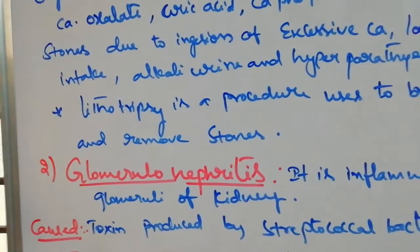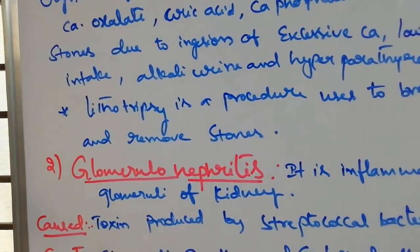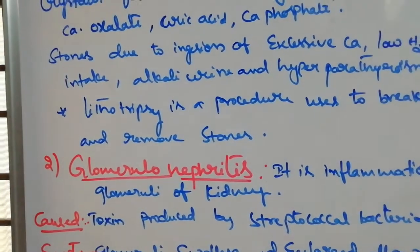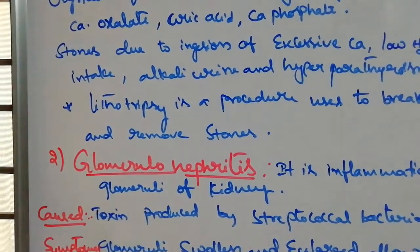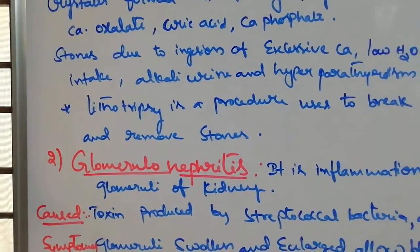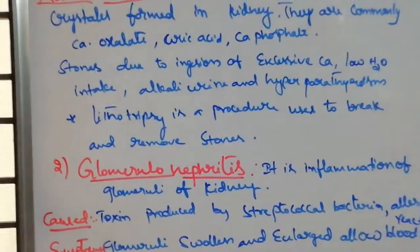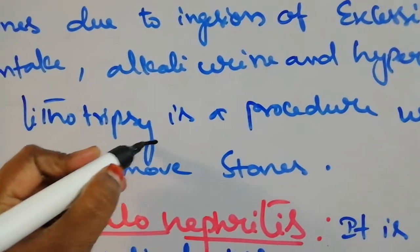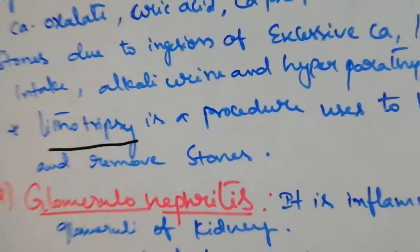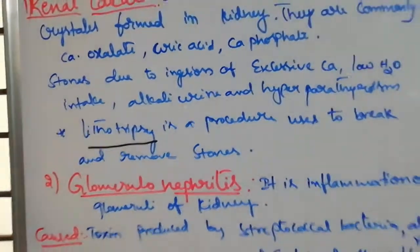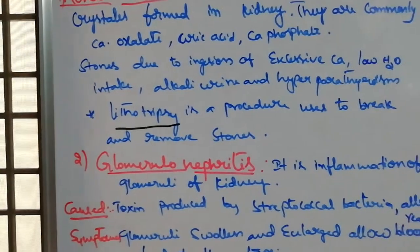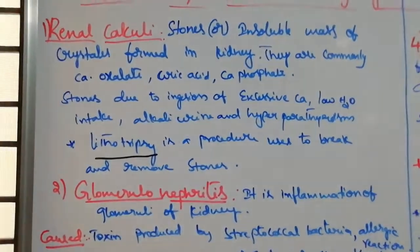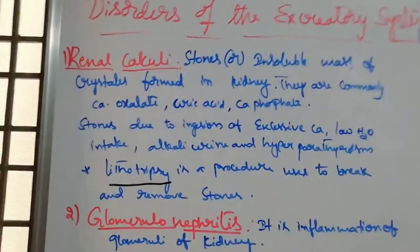Lithotripsy is a method where high intensity waves are sent to break and remove the stones. In this method, high intensity waves are sent which break and remove the stones. This is about renal calculi.